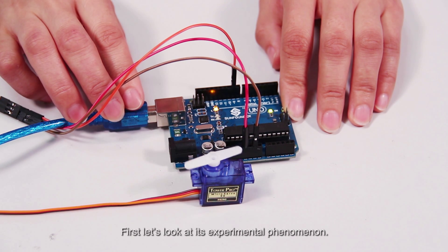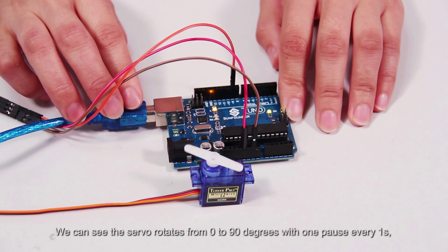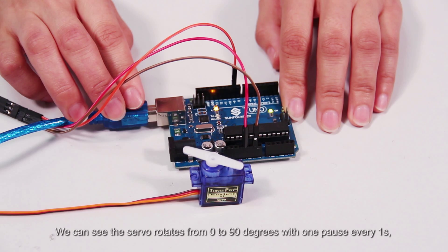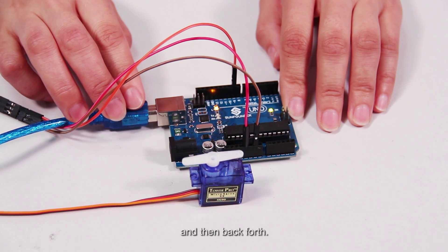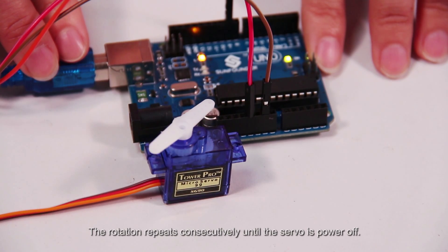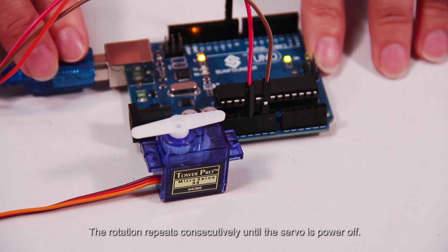First, let's look at its experimental phenomenon. We can see the servo rotates from 0 to 90 degrees with one pause every one second and then back and forth. The rotation repeats consecutively until the servo is powered off.